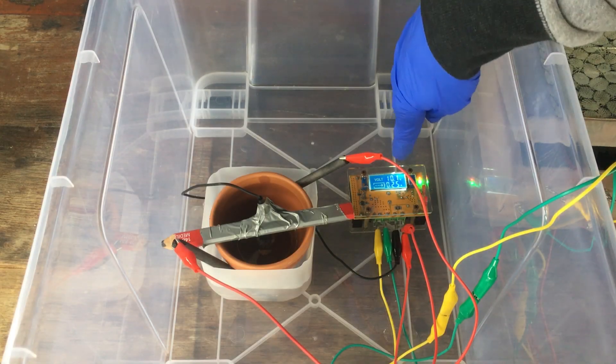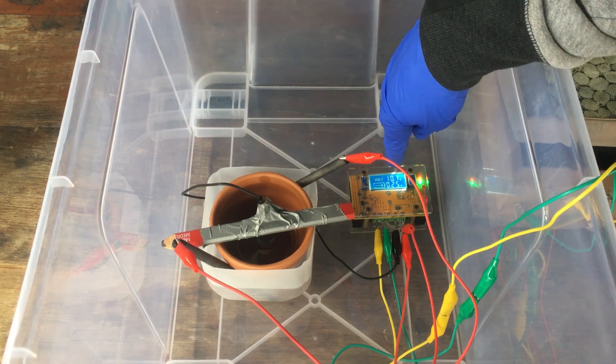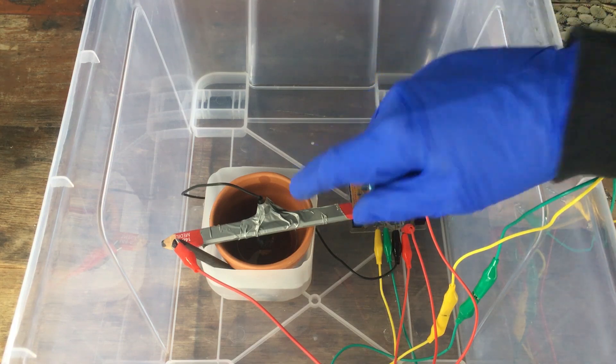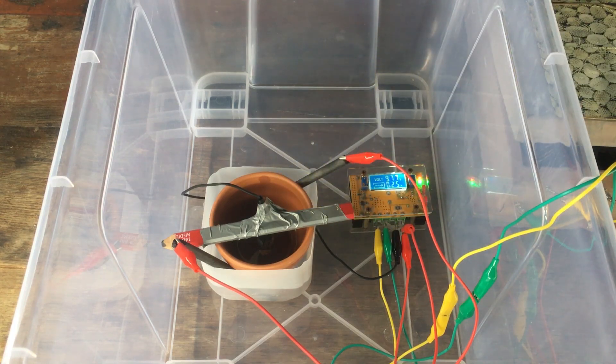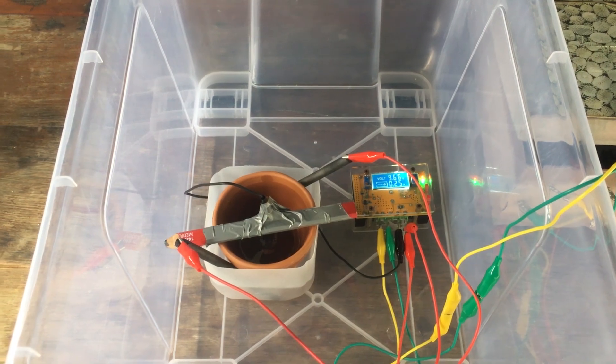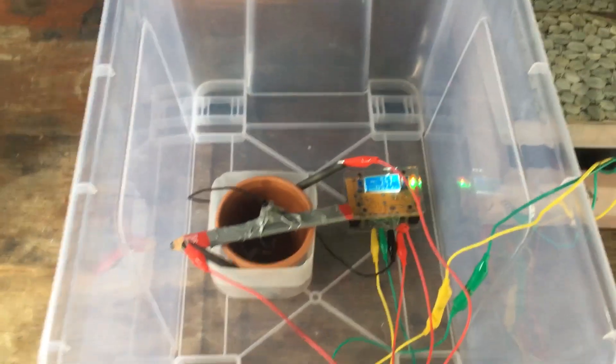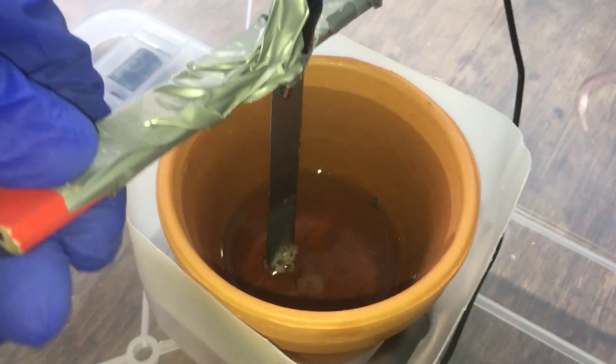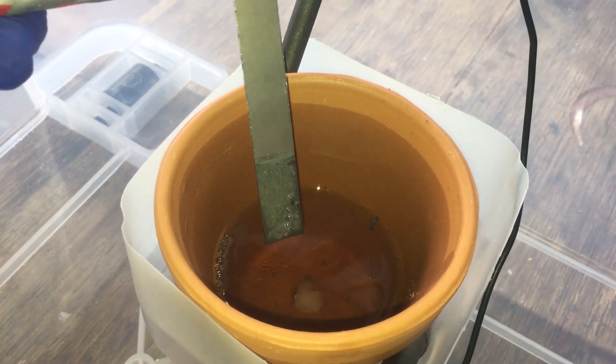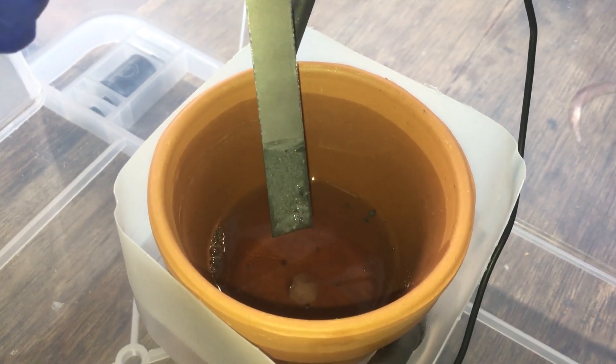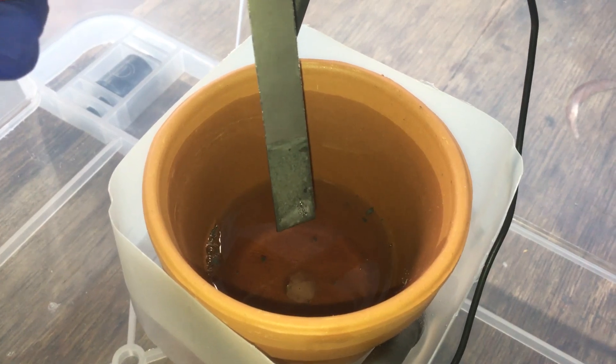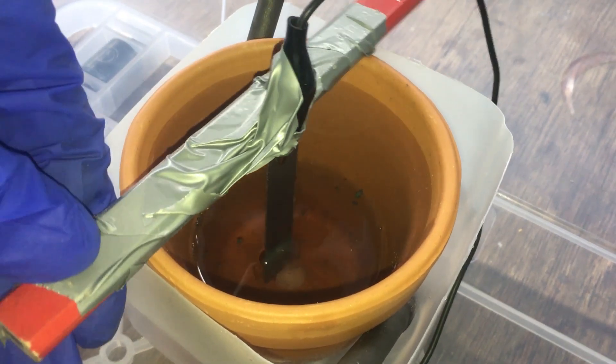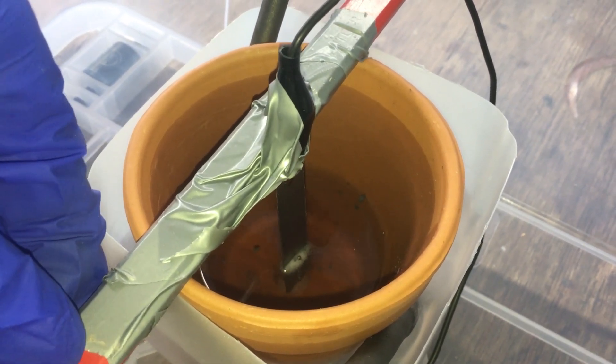And look at that already. After just five minutes, we've already hit our target current of a quarter of an amp. So this is good to just leave going for a few hours at least to get a good coating of manganese on our titanium strip. In fact, maybe if we have a look now, we might even see some manganese forming already. Oh yeah, there's definitely something forming on our titanium strip. I don't know how well it's adhering to the surface, but we'll leave that going for another few hours and we'll check back up on it.